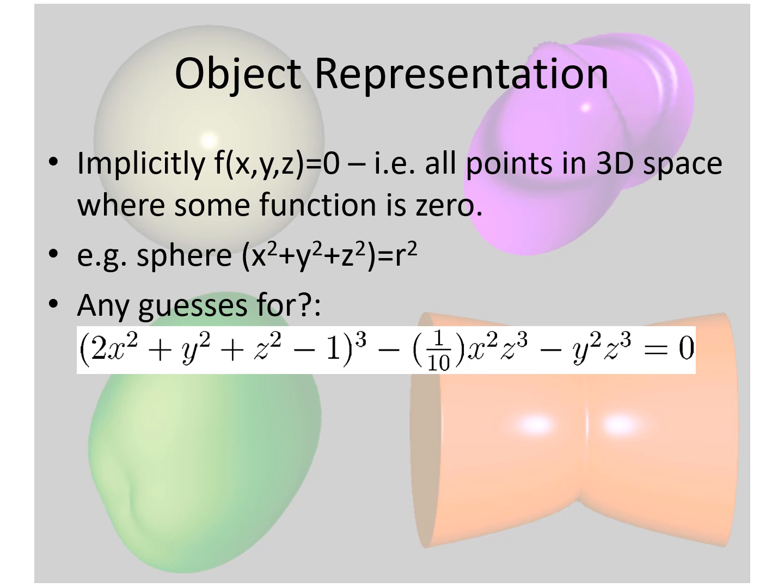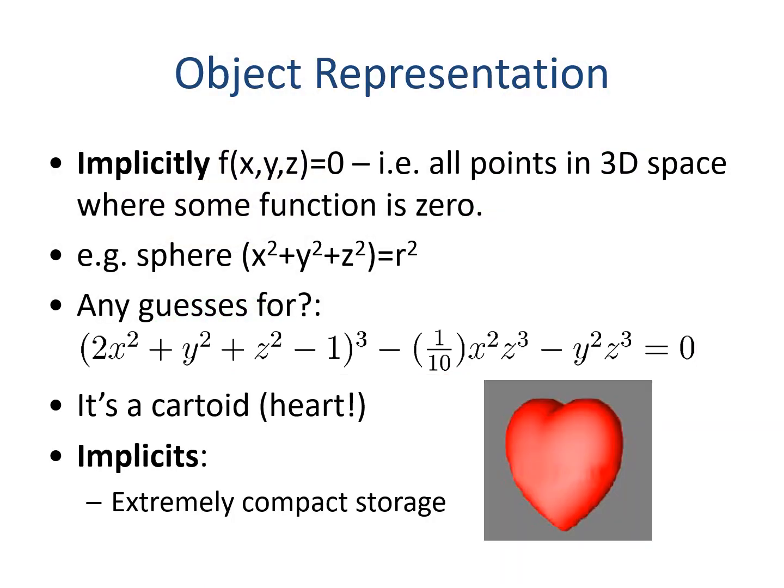Also, for example, the equation here is a cardioid. The benefit of this approach is that objects can be stored with few parameters, and we can infinitely zoom into the object without seeing a planar approximation, such as the triangular mesh that we will describe later on.